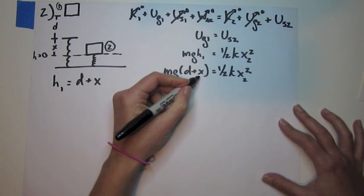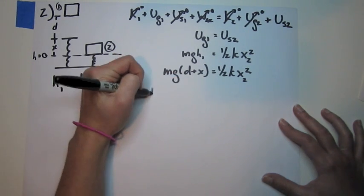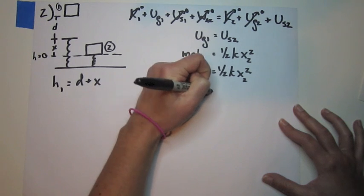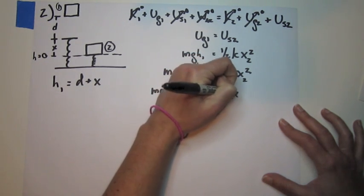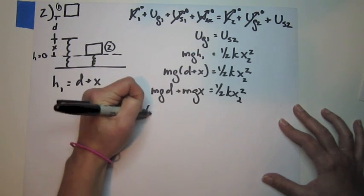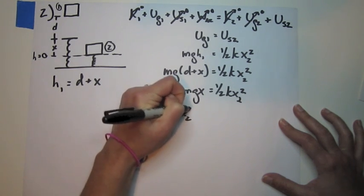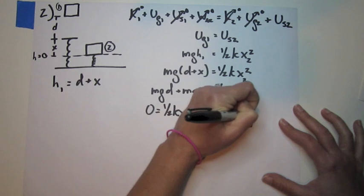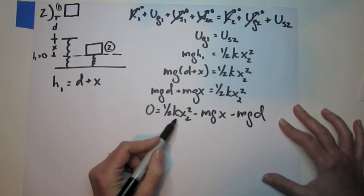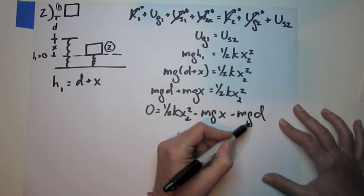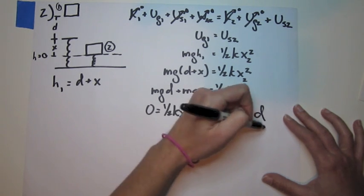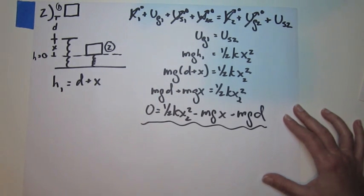Since X is actually our variable, we have a quadratic here. So we have to get it in standard form. We know K, we know M, we know G, we know D. And so now it's just plugging in your known values and solving for X.